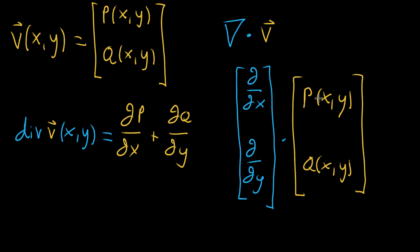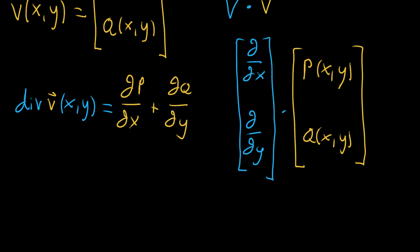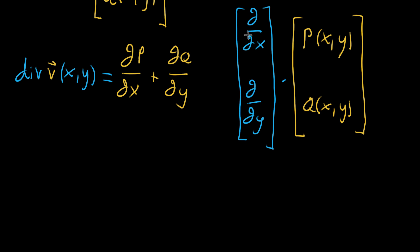And when you imagine doing this dot product, you're lining up terms, and the first one multiplied by the second. Quote-unquote multiplied, because in this case, when I say this first component multiplied by p, I really mean you're taking that partial derivative operator, partial partial x, and evaluating it at p. That's kind of what multiplication looks like in this case.